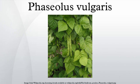Each leaflet is 6 to 15 cm long and 3 to 11 cm wide. The white, pink, or purple flowers are about 1 cm long, and they give way to pods 8 to 20 cm long and 1 to 1.5 cm wide. These may be green, yellow, black, or purple in color, each containing 4 to 6 beans. The beans are smooth, plump, kidney-shaped, up to 1.5 cm long, range widely in color, and are often mottled in two or more colors.